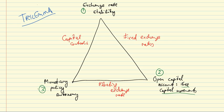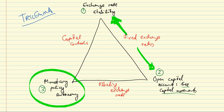We have these three goals, but the trilemma means we can usually choose only two of them. In the extreme, you must sacrifice one goal to achieve the other two. For example, if we choose exchange rate stability and open capital accounts, we can achieve that with a fixed exchange rate, but we must sacrifice monetary policy autonomy.